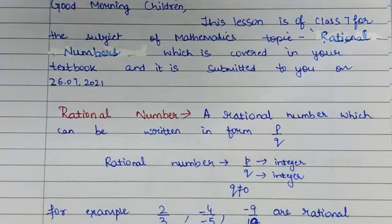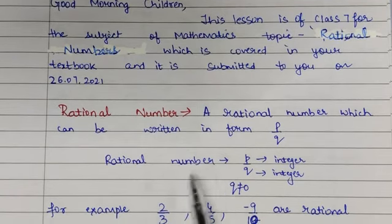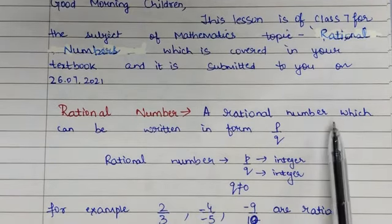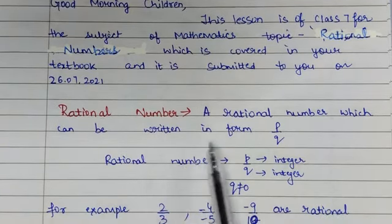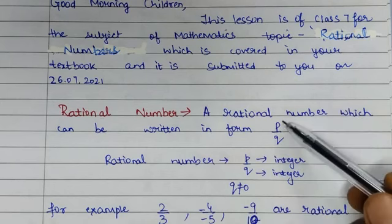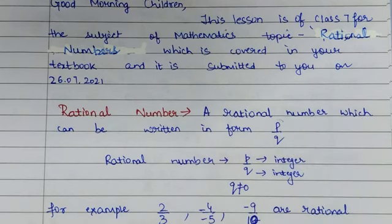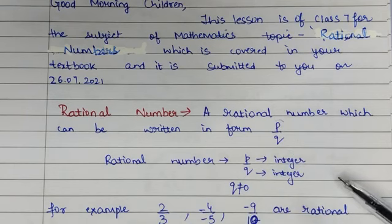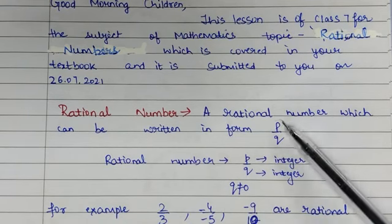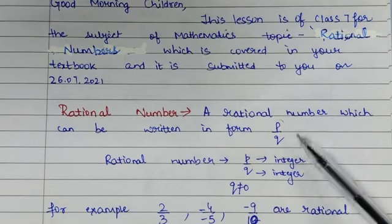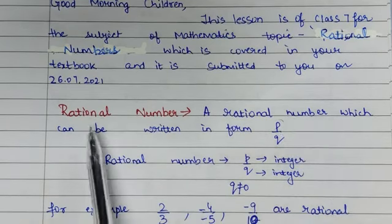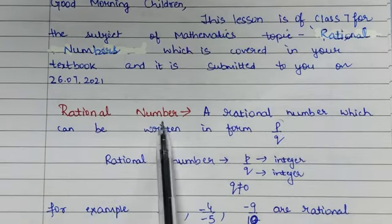Students, let us start our topic Rational Numbers. A rational number is a number which can be written in the form of P upon Q. Any number, if we can write it in the form of P upon Q, then that number is called a rational number.